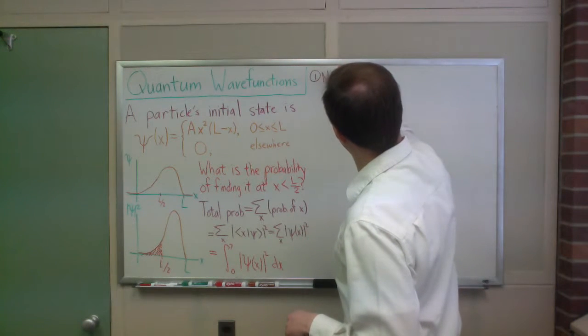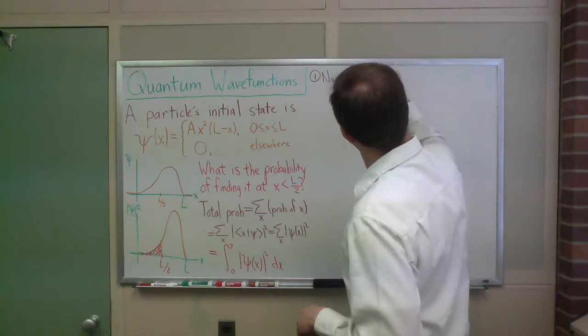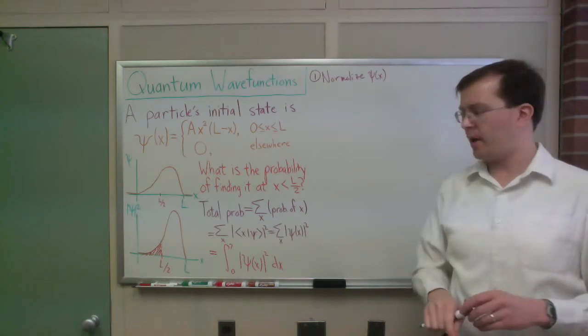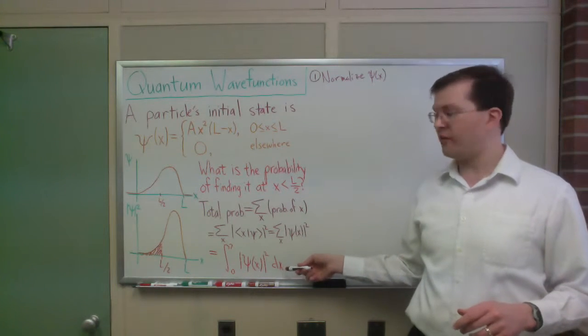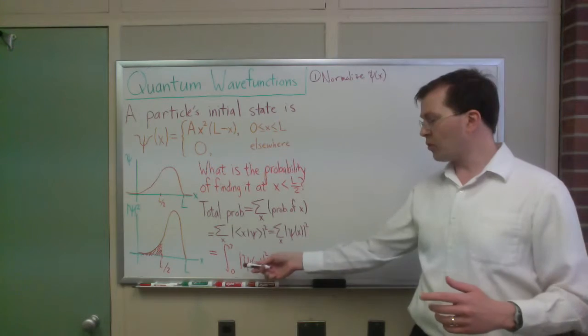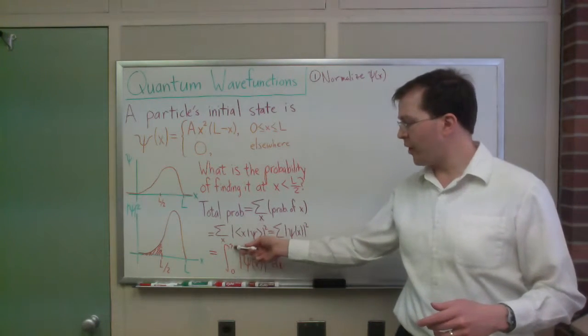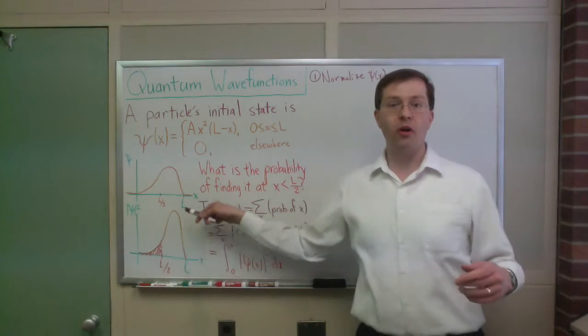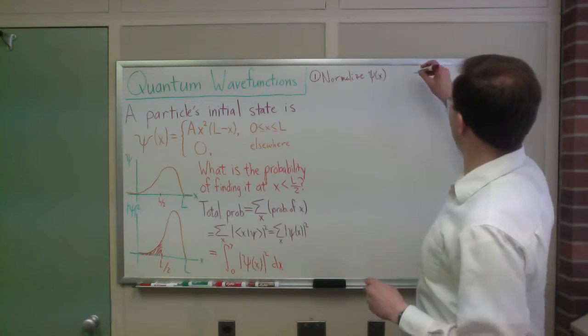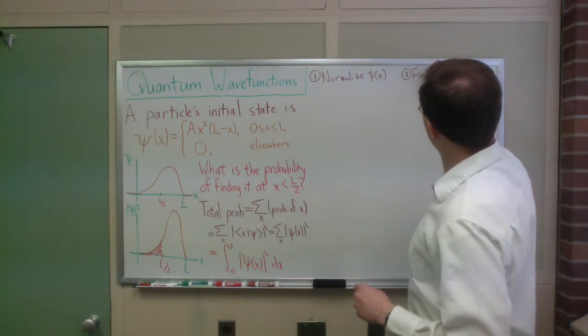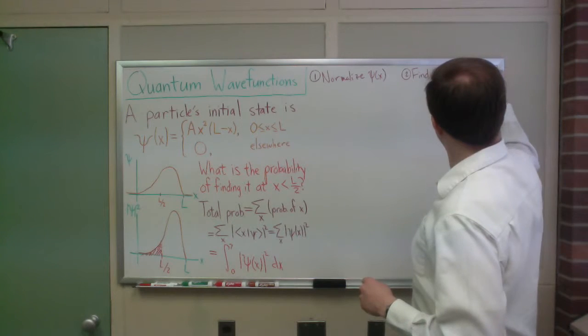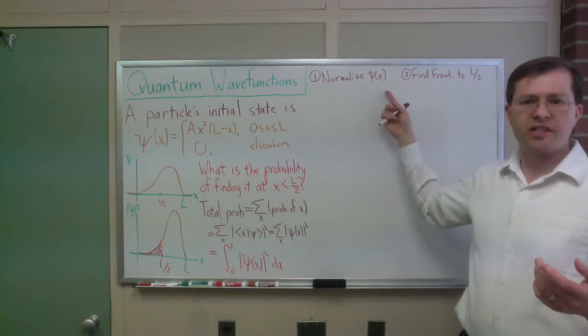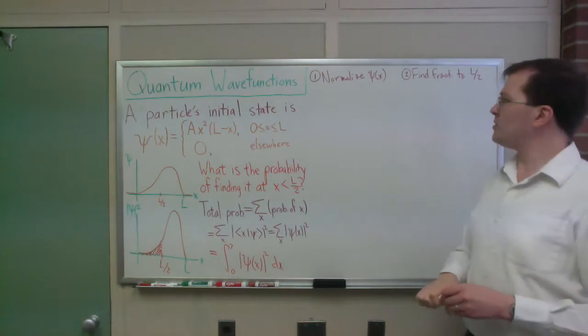psi of x. Normalize my wave function. What's that mean? That means I want it to be that the total probability adds up to 1. So this integral, in fact, assumes a normalized wave function. This whole formalism assumed a normalized quantum state. So to have a normalized wave function, that means if I go from 0 to L, really from minus infinity to infinity, but it's 0 outside that range, if I go from 0 to L, I'd better come up with a total probability of 1. So that's going to be my first step. Then my second step will be find the fraction up to L over 2. So to normalize, these two steps are actually going to look very similar because they're both doing an integral just with different limits.